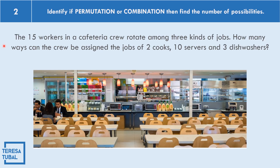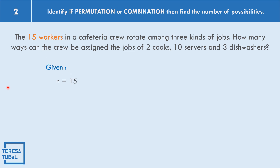In example number two: fifteen workers in a cafeteria crew rotate among three kinds of jobs. How many ways can the crew be assigned the jobs of two cooks, ten servers, and three dishwashers? Given: N equals 15 workers; cooks C equals 2, servers S equals 10, dishwashers D equals 3. This example is a permutation — specifically a distinguishable permutation.